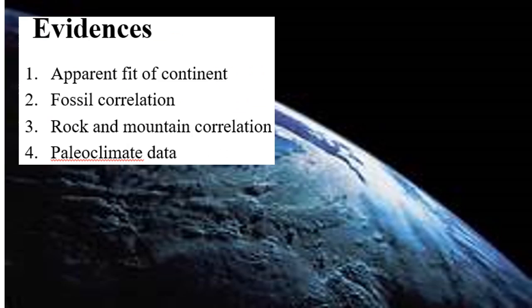To support his hypothesis, Wegener presented different evidences. The first evidence is the apparent fit of the continents. The second is fossil correlation. Third is rock and mountain correlation. Fourth is paleoclimate data. Let's discuss all these evidences in detail.